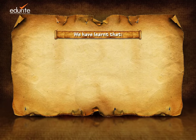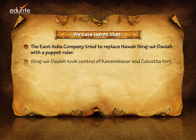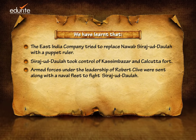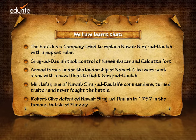We have learnt that the East India Company tried to replace Nawab Sirajuk Daula with a puppet ruler. Sirajuk Daula took control of Kasim Bazar and Calcutta Fort. Armed forces under the leadership of Robert Clive were sent along with a naval fleet to fight Sirajuk Daula. Mir Jafar, one of Nawab Sirajuk Daula's commanders, turned traitor and never fought the battle. Robert Clive defeated Nawab Sirajuk Daula in 1757 in the famous Battle of Plassey.